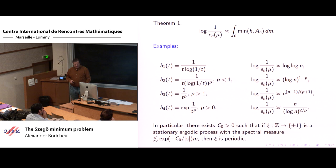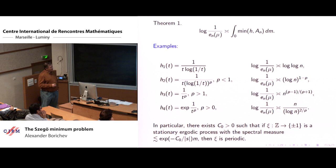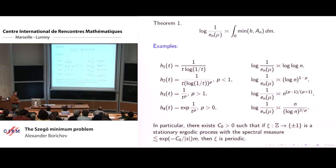In particular, these results imply, for our probability question, that there exists an absolute constant such that if we have a stationary ergodic process with values plus or minus one, and with spectral measure majorized appropriately — meaning it has at least one zero which is deep in this sense — then our sequence is periodic.